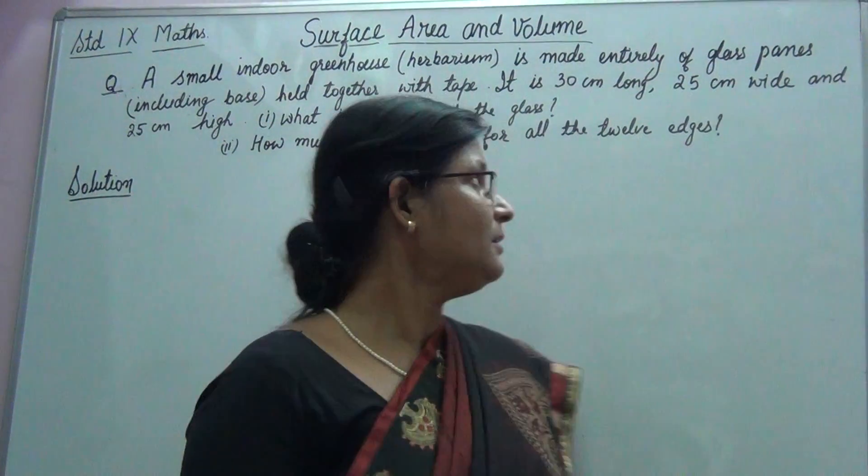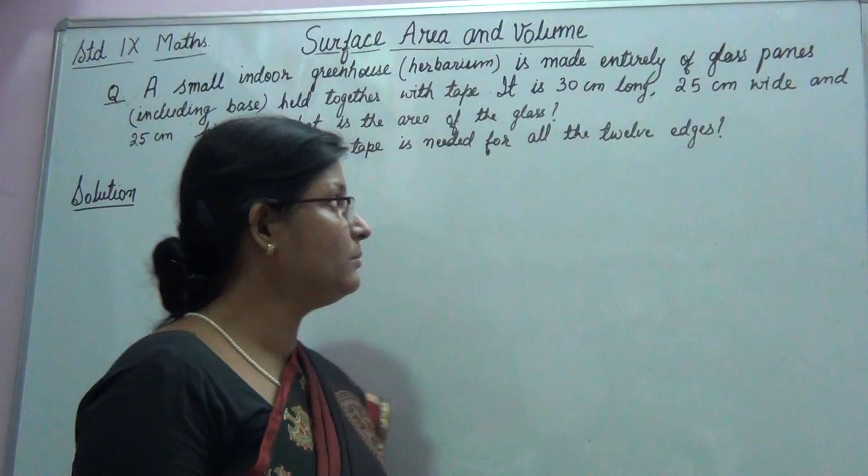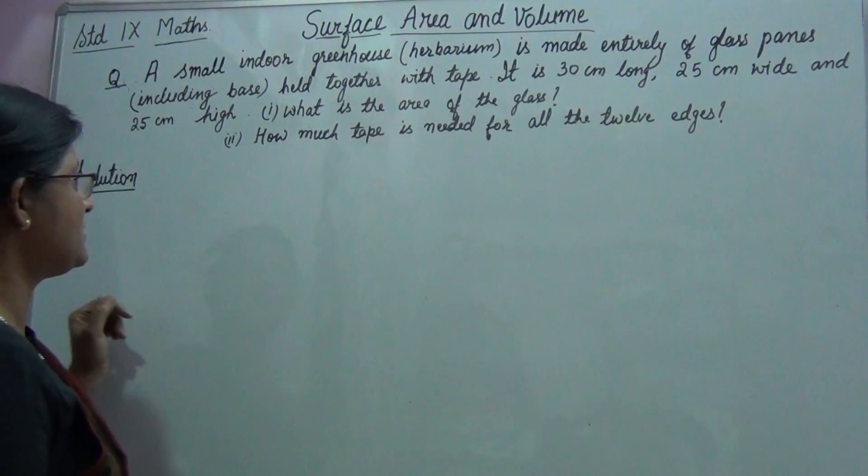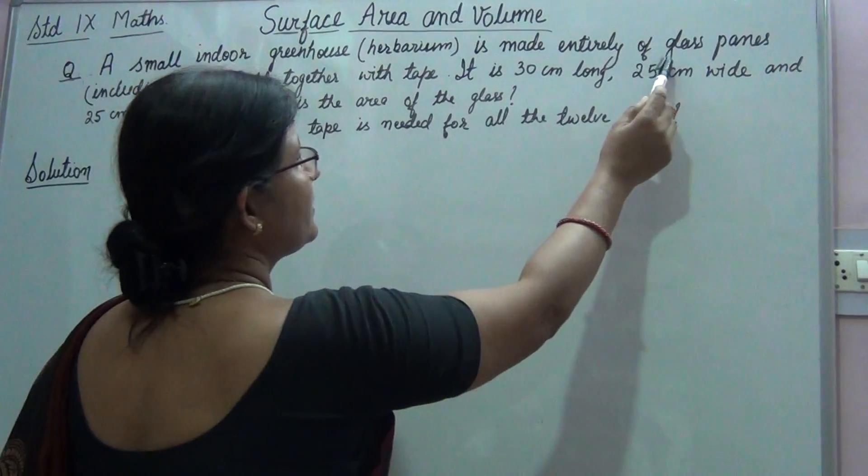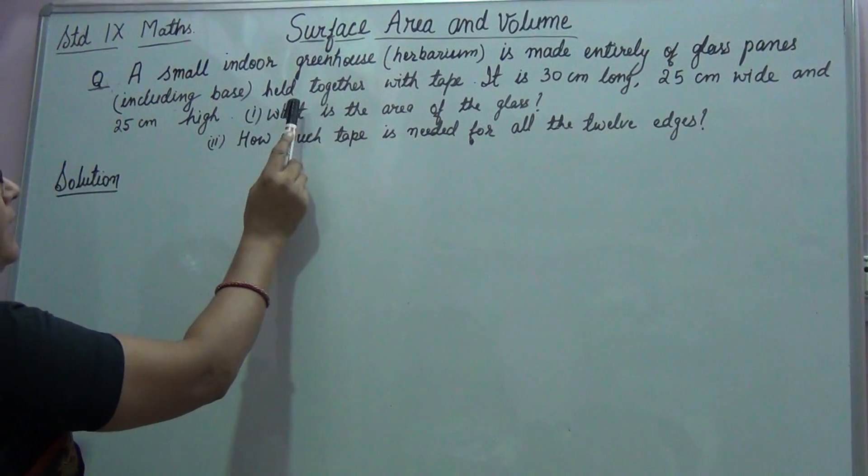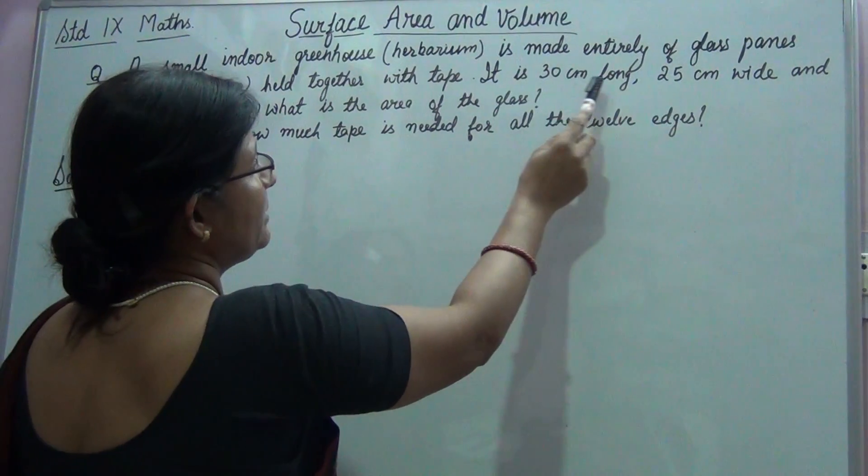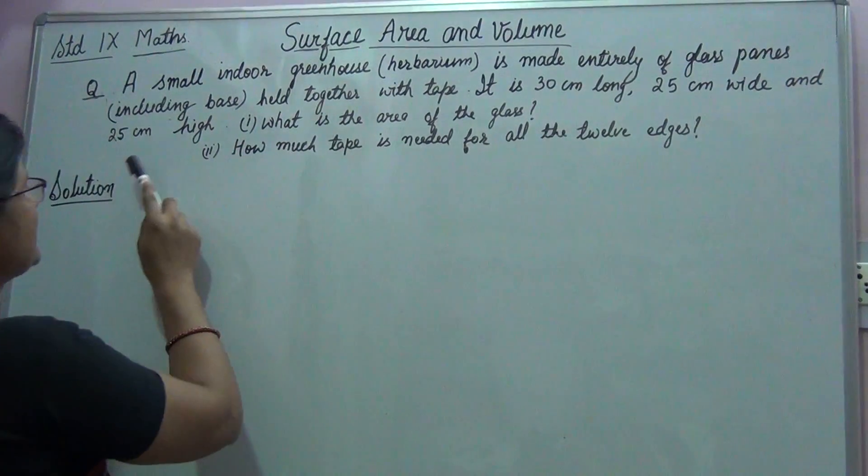Children, let us learn how to solve sums from the chapter surface area and volume. Here I have a sum for you. The question is: a small indoor greenhouse is made entirely of glass panes including base, held together with tape. It is 30 centimeter long, 25 centimeter wide, and 25 centimeter height.